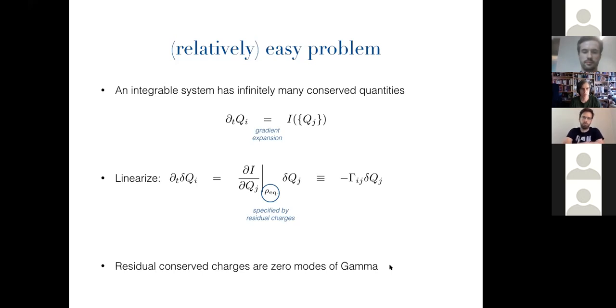And this matrix has some number of zero modes that correspond to the residual conserved charges. So once again, you break integrability, you destroy almost all the conserved charges, but you might still have a few left over. Like, for instance, if you break the Hamiltonian, you still have energy conserved. You might also have, let's say, momentum conserved if your perturbation is Galilean, you might have number conserving perturbations, etc. So whatever these residual conservation laws are manifest as zero modes of the gamma matrix, that's going to be important for what follows.